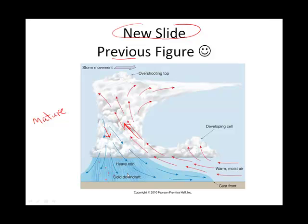The downdraft is a cold downdraft. It's cold relative to a few things, among them what we call evaporative cooling, which I mentioned earlier. So basically, this downdraft is not just gravity pulling water down — it literally is air moving down. The next slide I want to talk about is what happens in some cases with that movement of air downward associated with the downdraft.